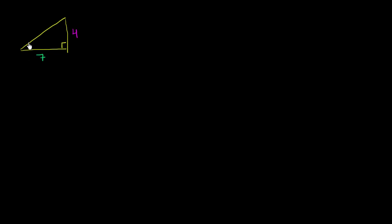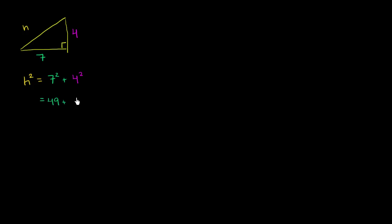Let's say that I have a triangle where this length down here is 7, and the length of this side up here is 4. Let's figure out what the hypotenuse is going to be. Let's call the hypotenuse h. We know that h squared is going to be equal to 7 squared plus 4 squared — from the Pythagorean theorem, the hypotenuse squared equals the sum of the squares of the other two sides. So this is equal to 49 plus 16.